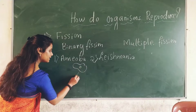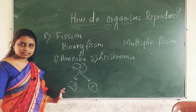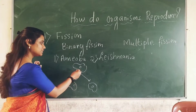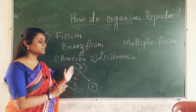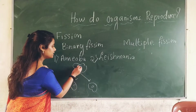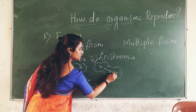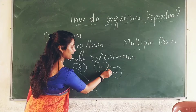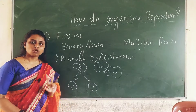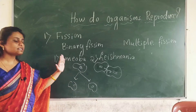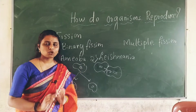The prefix 'bi' means two — in binary fission, one organism splits into two organisms. In multiple fission, one organism splits into multiple young ones. Examples of binary fission are amoeba and leishmania. In binary fission, the organism contains DNA — a hereditary molecule present in every cell. The DNA replicates, making another copy, and the cell divides forming two daughter cells which are clones of the parent.